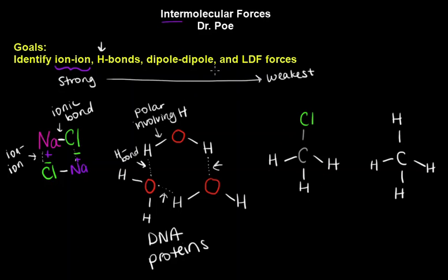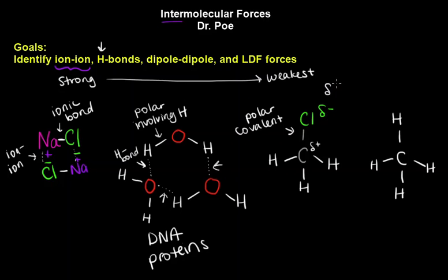Next up is dipole-dipole. This one is a bit harder to remember. It still involves a polar covalent bond — we see a bond between chlorine, which is electronegative, and carbon, which is not — but this does not involve an H. The chlorine, being electronegative, pulls electrons toward itself and becomes slightly negative, while the carbon becomes slightly positive. This partial charge distribution means it can line up next to something slightly positive, just like in ionic — but this is partial charge, not full charge, so it's a bit weaker.